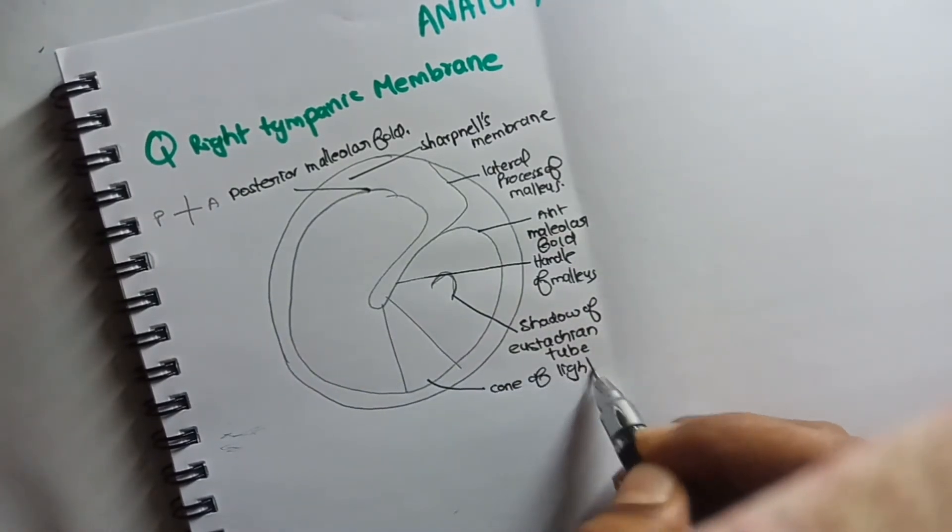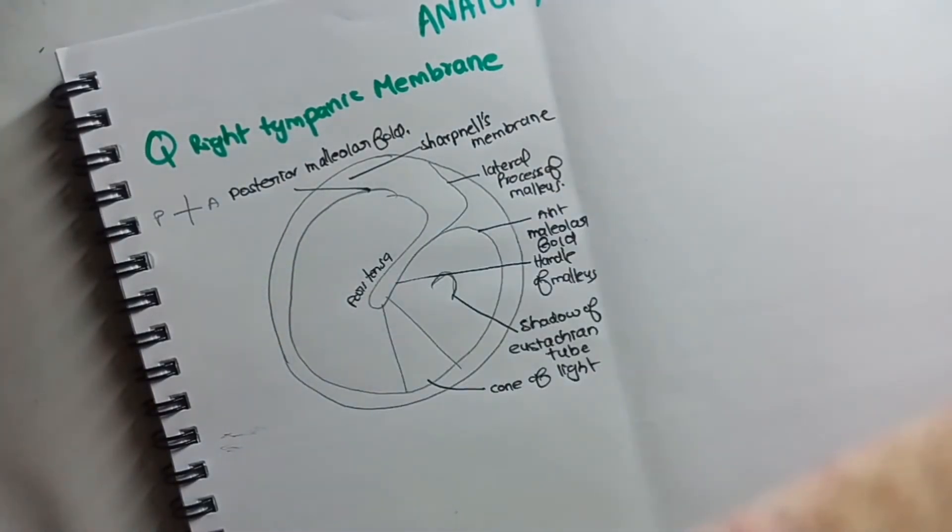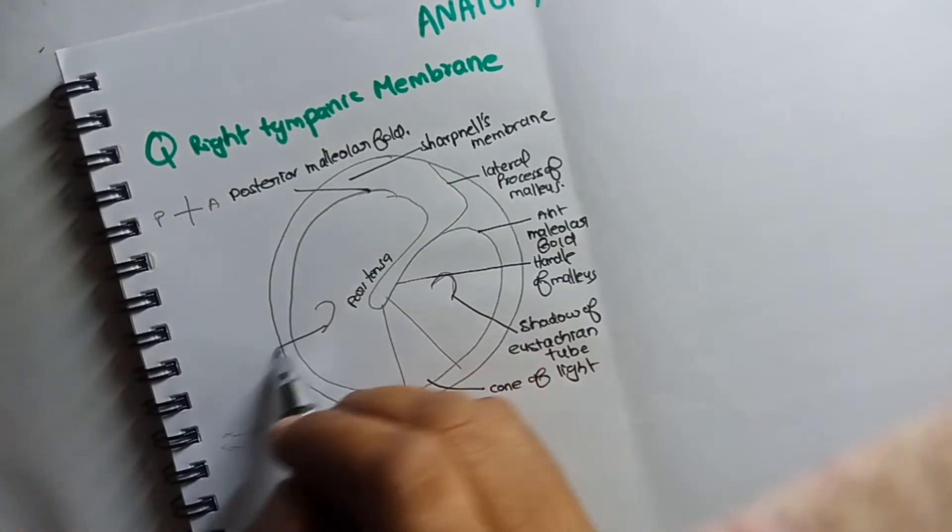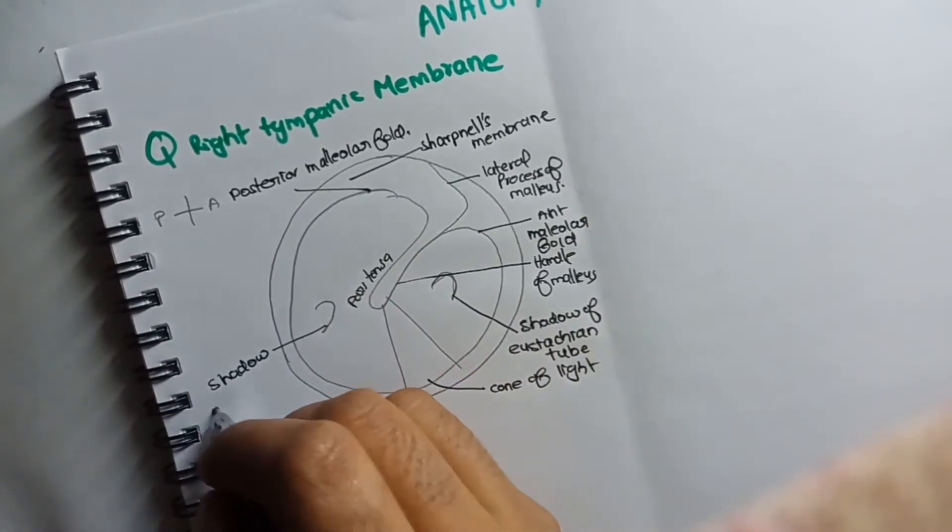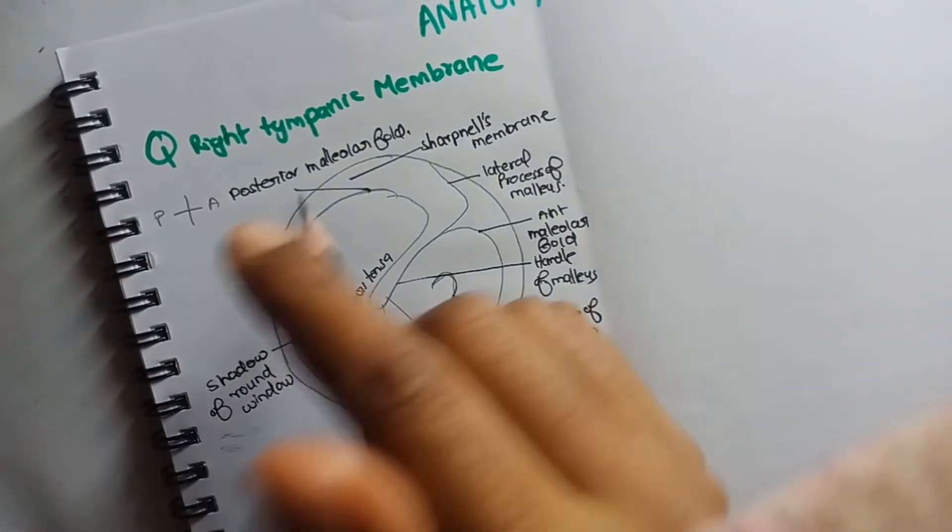Now the central region of the tympanic membrane is known as pars tensa, like that of the pars flaccida. Posteriorly we can find the shadow of the round window. So anteriorly it was eustachian tube, and posteriorly it was round window.